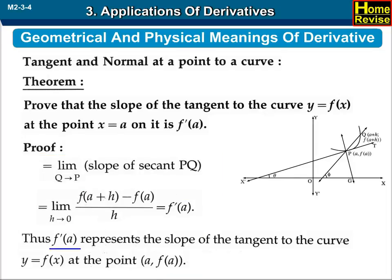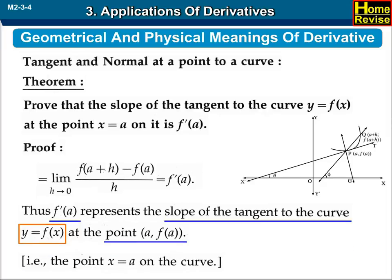Thus, f prime of a represents the slope of the tangent to the curve y equals f of x at the point (a, f(a)), that is, the point x equals a on the curve.